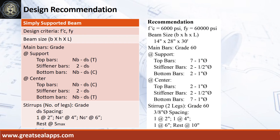Design recommendation: FC prime equals 6,000 psi. FY equals 60,000 psi. Beam size is 14 inches by 28 inches by 30 feet. Main bars of grade 60. At support — top bars: 7 pieces, 1 inch diameter bar. Stiffener bars: 2 pieces, 1 inch diameter bar. Bottom bars: 7 pieces, 1 inch diameter bar. Stirrups: 2 legs of grade 60, 3/8 inch diameter bar, spacing — 1 at 2 inches, 1 at 4 inches, 1 at 6 inches, rest at 10 inches.